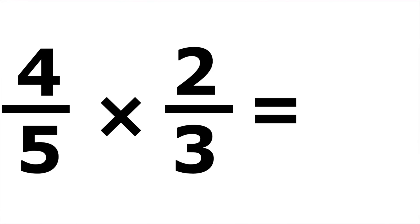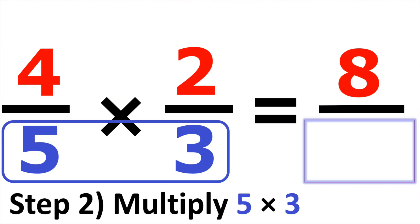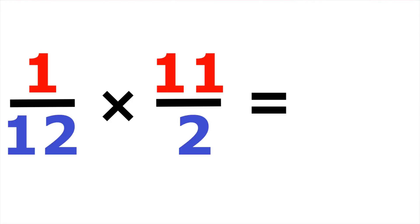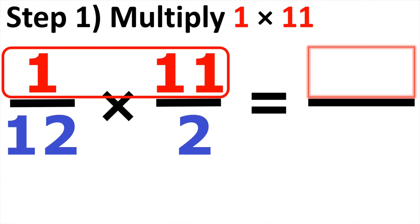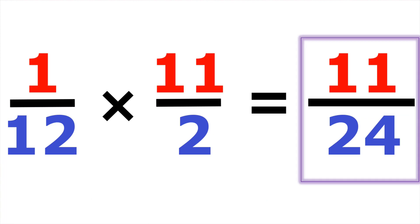Example number twelve, we have four over five times two over three. Starting with the numerators: four times two gives us eight. At the bottom, five times three gives us fifteen, so the answer is eight over fifteen. Number thirteen: up top we have one and eleven, so one times eleven gives us eleven. At the bottom, twelve and two — twelve times two gives us twenty-four. The answer is eleven over twenty-four.